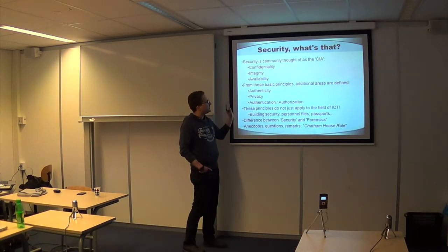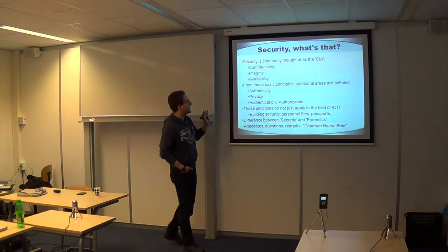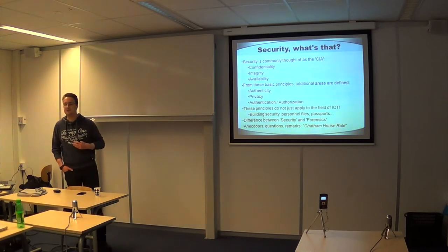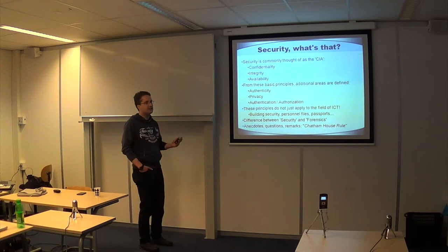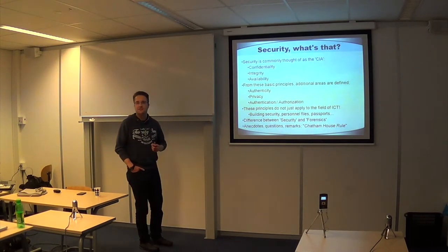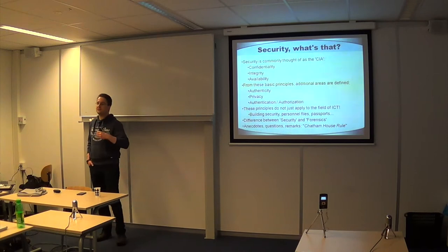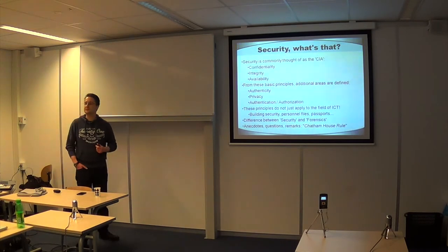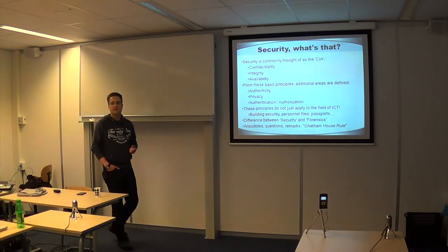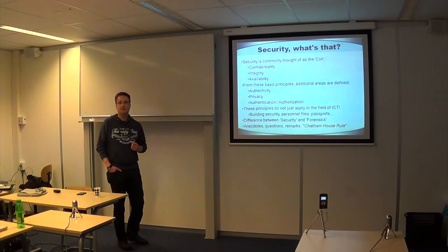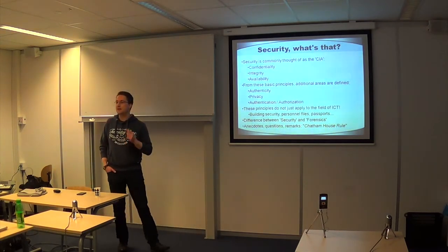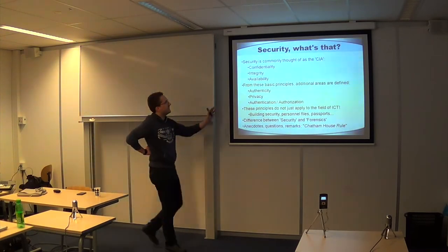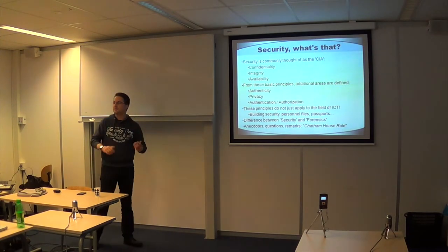If you start thinking about the additional areas, you can understand what authenticity means and why privacy gets involved. Privacy means you are in control of who can view your data or not — you are the one owning the data at all times, and you can decide when others can view it. So this has to do with availability and confidentiality again — you can see where these overlaps are.